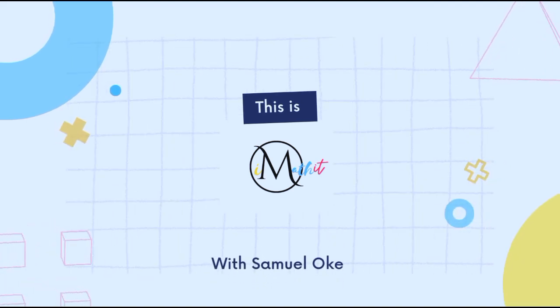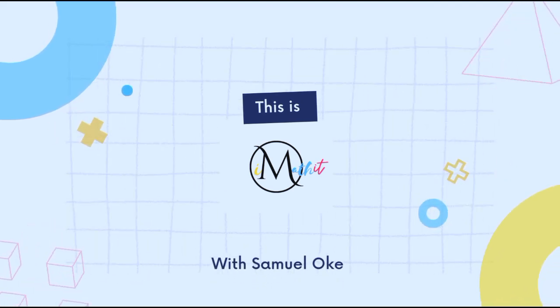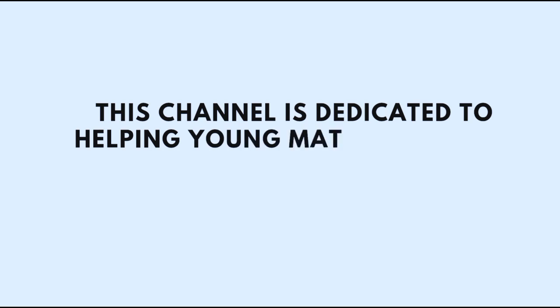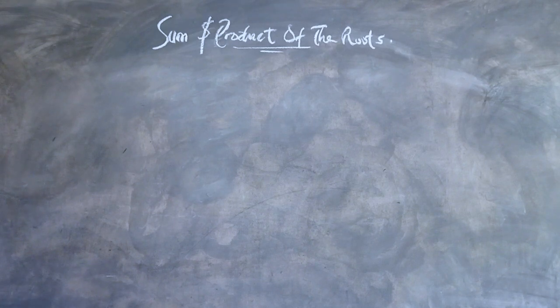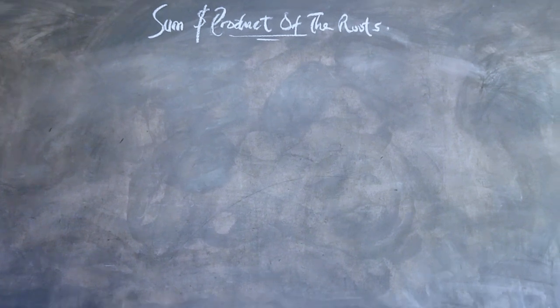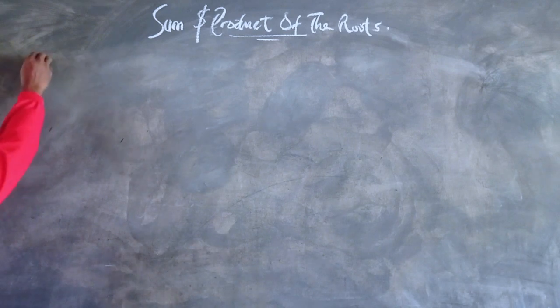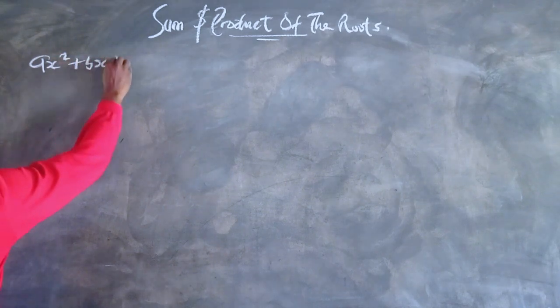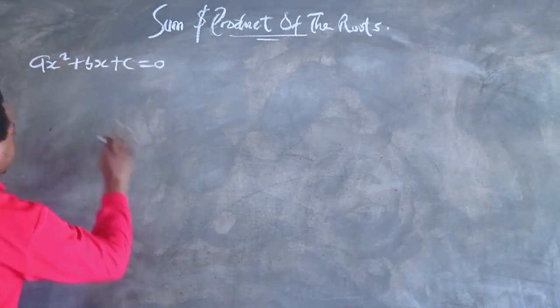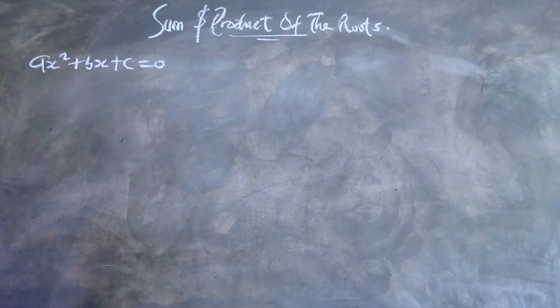Hello, this is iMathit with Samuel Oke. This channel is dedicated to helping young mathematicians reach their full potential as soon as possible. In this lesson, we will be looking into how to find the sum and product of the roots of a quadratic equation without actually solving it. The general form of a quadratic is ax² + bx + c = 0.